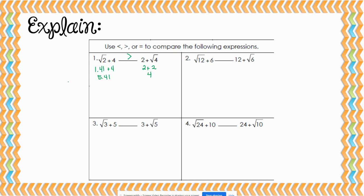Next, we have the square root of 12 plus 6. The square root of 12 is approximately 3.46. So we would do 3.46 plus 6, which gives us 9.46. We don't even have to work the other side out, really, because we're starting with 12 and adding to it, so we know that one is going to be larger. So the square root of 12 plus 6 is less than 12 plus the square root of 6.